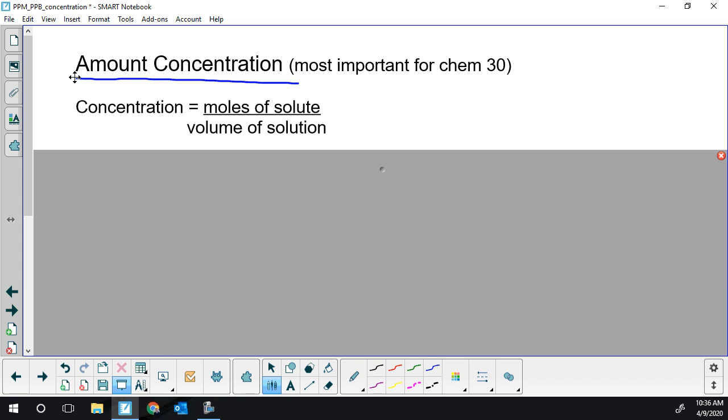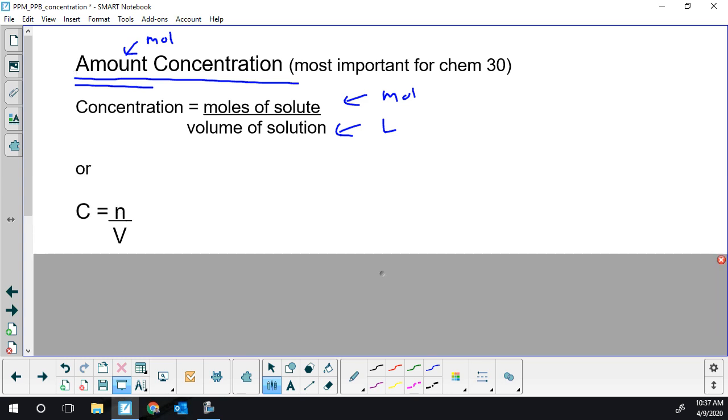The definition of amount concentration includes moles in it. In chemistry, the word amount means moles. So if you are ever asked what is the amount of calcium, it does not mean mass, it means how many moles there is of something. Amount concentration is calculated by using the moles of solute divided by the total volume of solution. The numerator will always be calculated in moles and the denominator will always be calculated in liters. It is very common for the denominator to be given to you in milliliters and you would need to convert it.